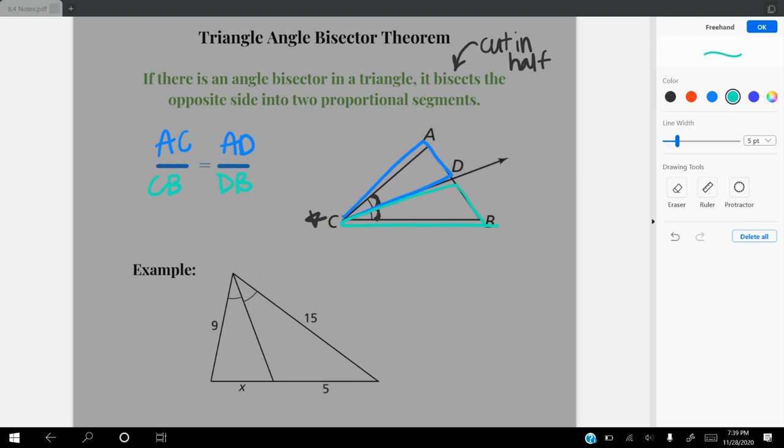And this is going to be true no matter what the triangles look like, as long as you have an angle bisector that's cutting this bottom part. So for example, let's try this next one.